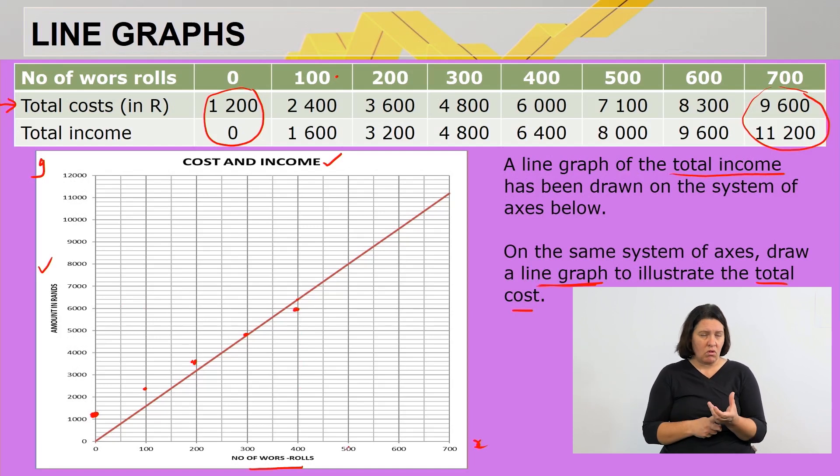The next one is 500 wors rolls with a cost of R7,100. There's 7000, all the way to 7100. Then 600 rolls will be R8,300. So there's 8000, 300 will be in the middle there. And then our last point here is for 700 rolls, which is 9600, so there's 9600, all the way to that side.